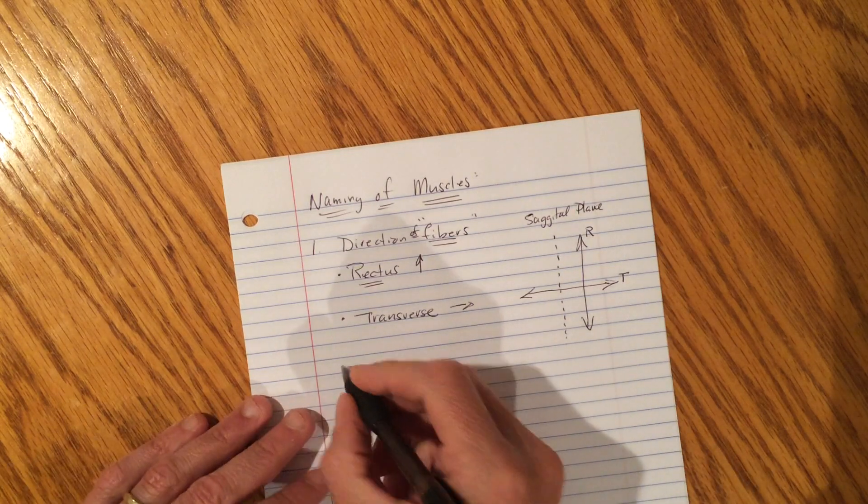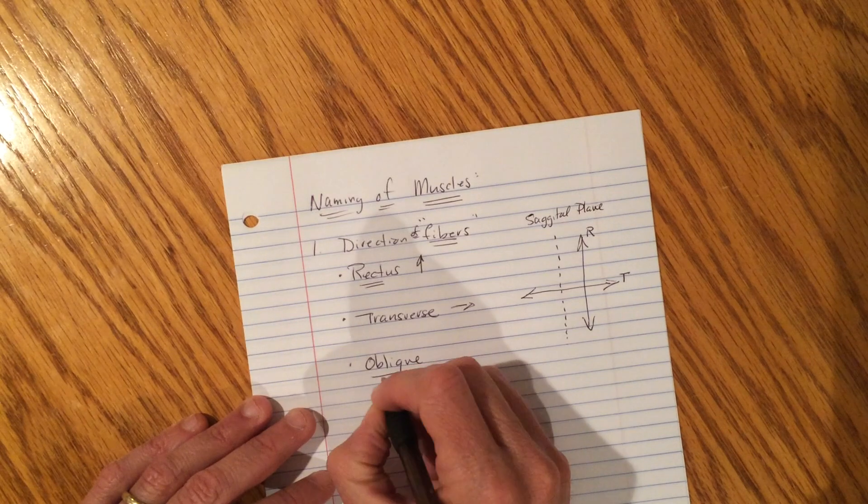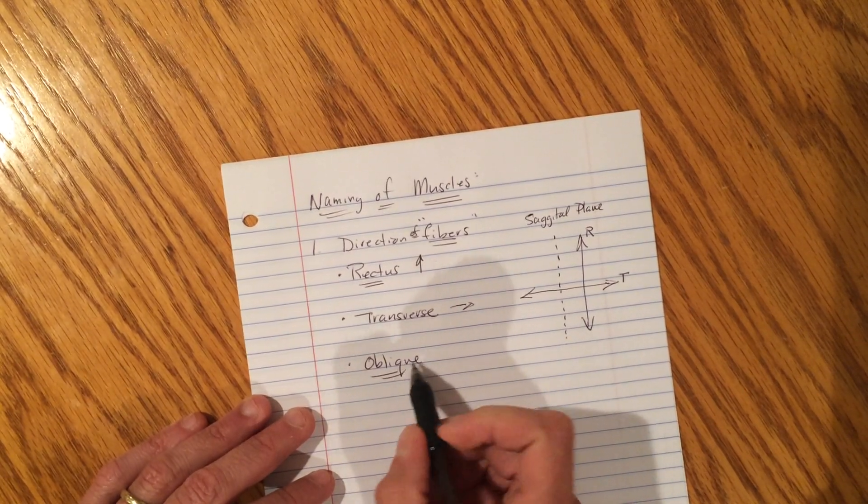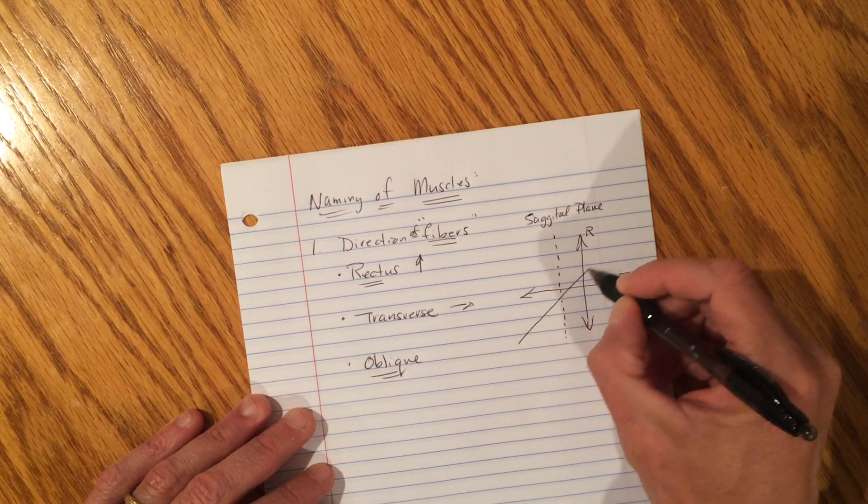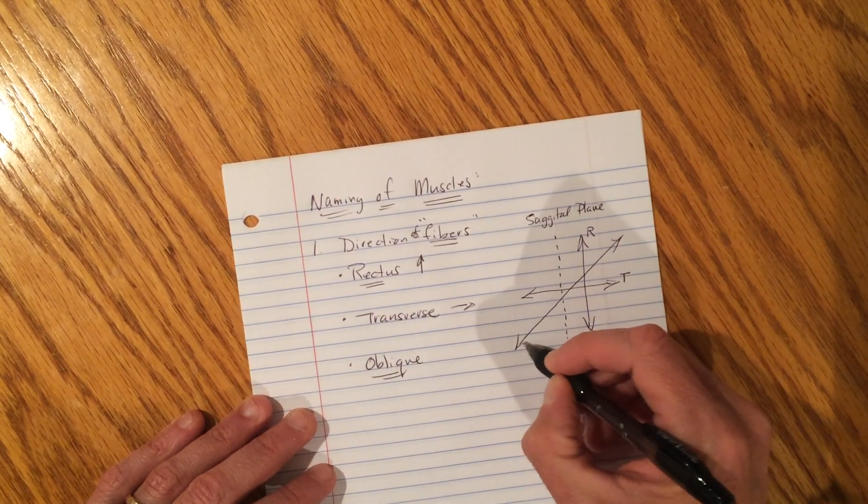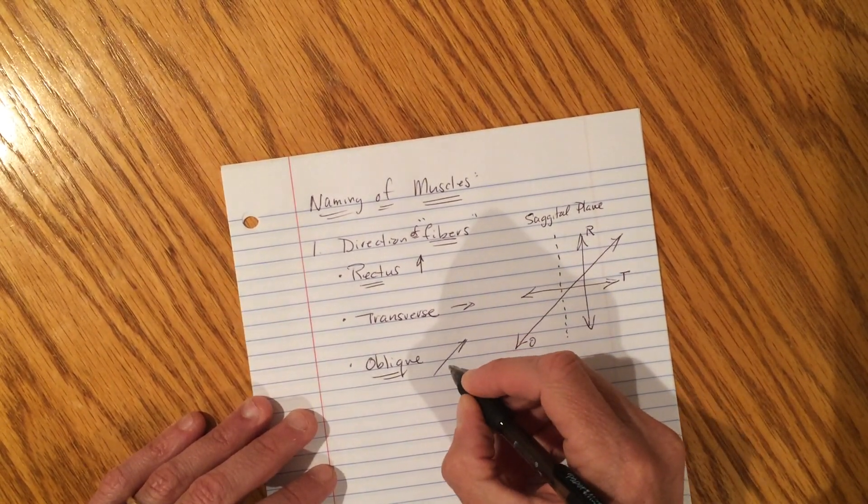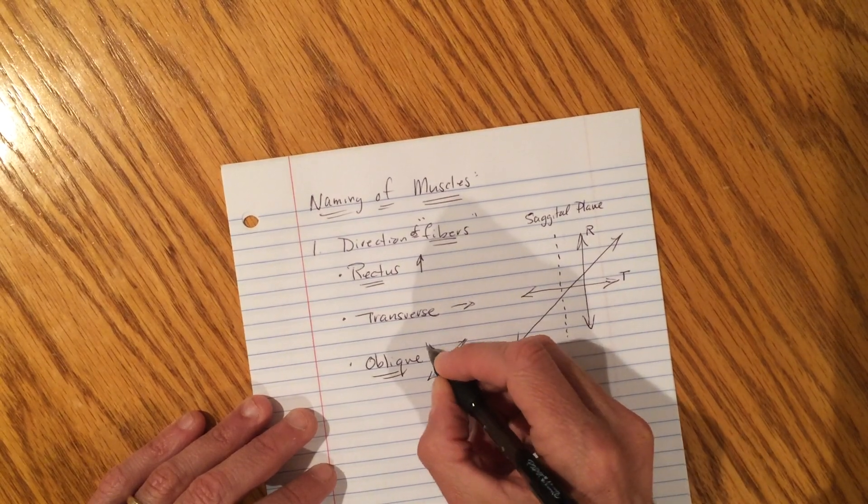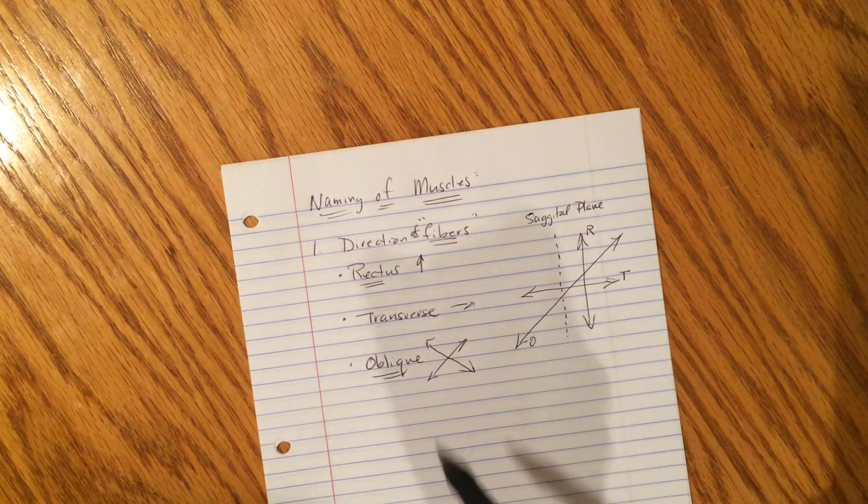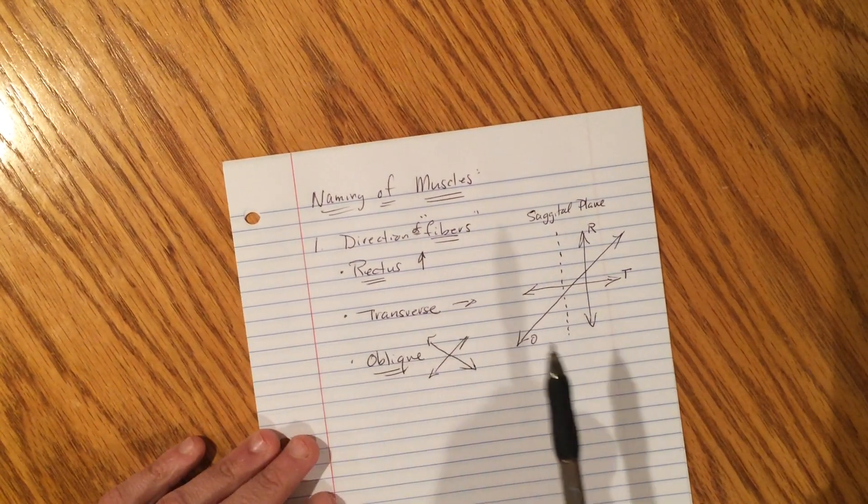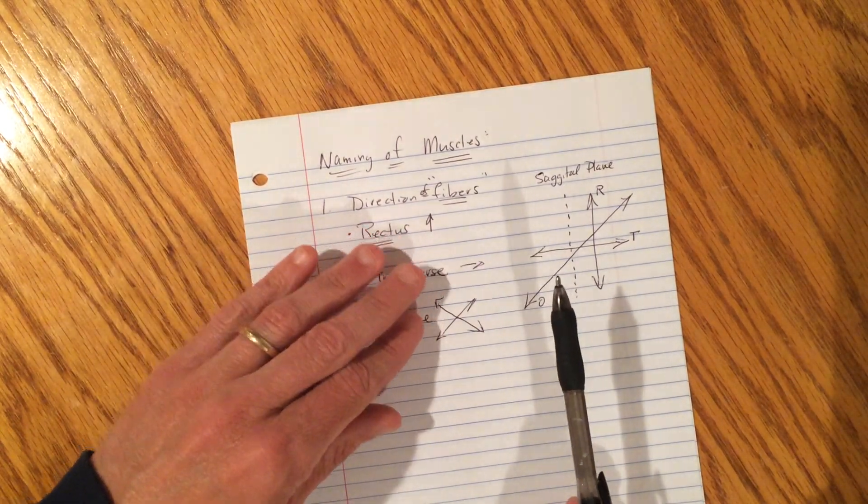So rectus abdominis is running up and down. And transverse means they're running from side to side. So we got up and down, side to side. What's left? You guessed it. There's a science word called oblique. If you see that word in the name of a muscle, it means the fibers are running at an angle, some type of angle, to the midsagittal plane. Could go up, could go down. Just depends on what muscle it is. So some muscles are named for the direction of fibers. There's examples include rectus, transverse, and oblique. And that wouldn't be the whole name. That would just be a part of it.